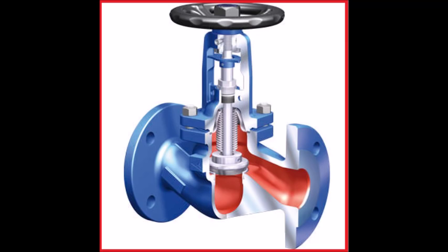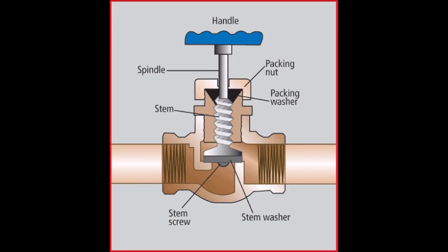Plugs are typically of the balanced or unbalanced type. Unbalanced plugs are solid and are used with smaller valves or with low pressure drops across the valve. The advantages are simpler design, with one possible leak path at the seat and usually lower cost. The disadvantages are the limited size.